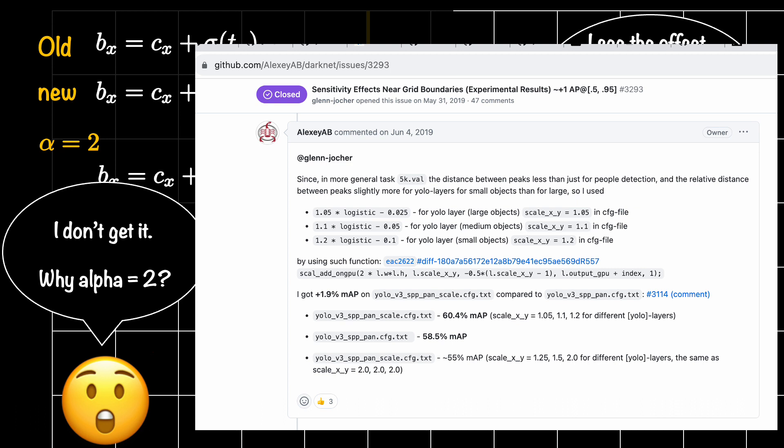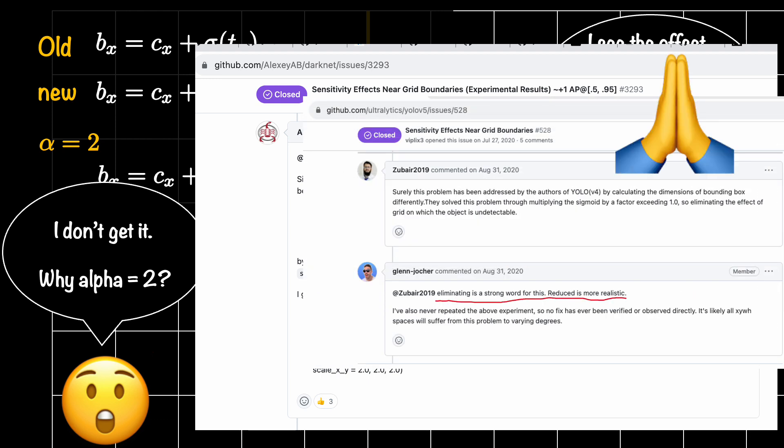And that is all that I wanted to share about this problem of grid sensitivity and its elimination. By the way, as Glenn from Ultralytics is mentioning here in this thread, eliminating is perhaps a strong word. Most likely we have reduced its impact using this clever workaround by changing the offset space. Hope you find this tutorial helpful. Let me know if you have any questions and comments and I would try my best to answer them. I wish you good luck in your learnings. See you in another tutorial. Bye bye.